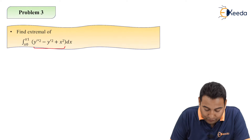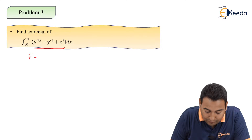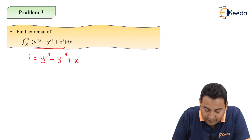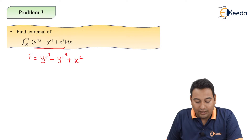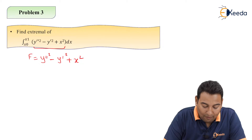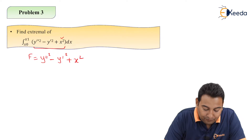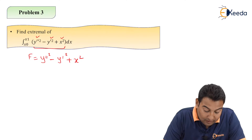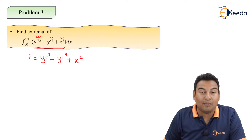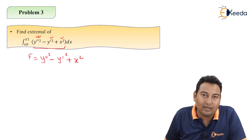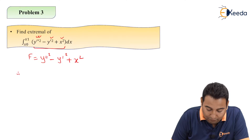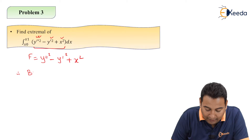The given functional is y double dash squared minus y dash squared plus x squared. If you see this problem, we have x, y dash, and because of y double dash, the problem is of higher order derivatives.